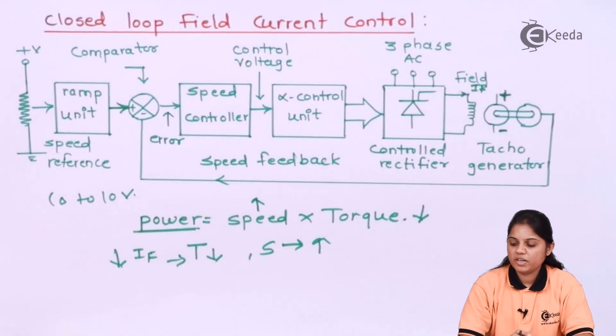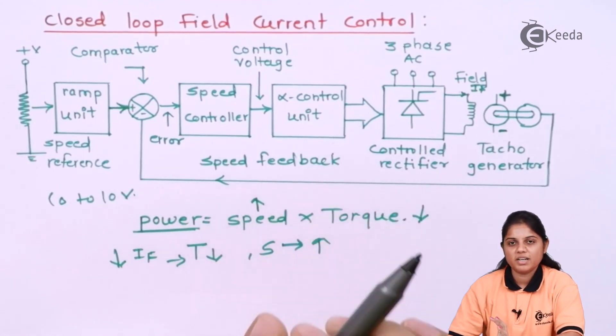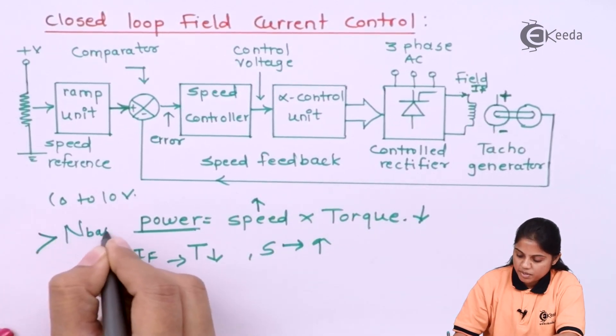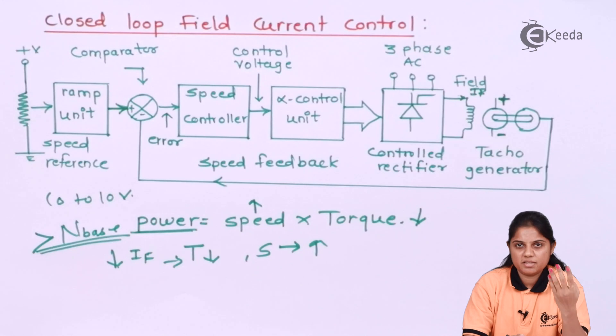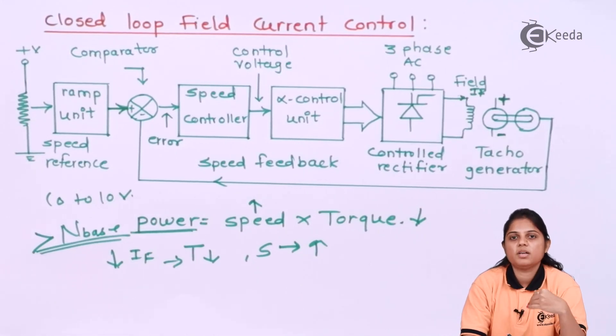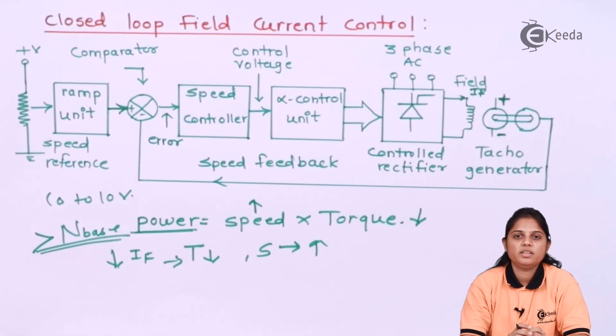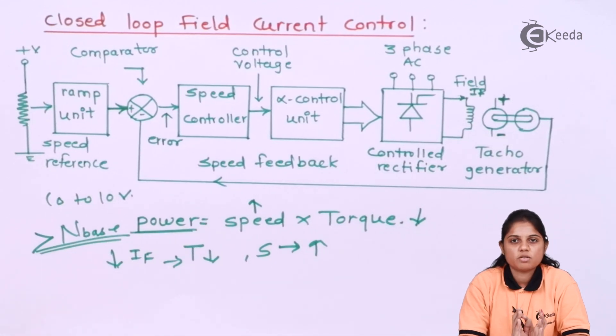This is how your closed loop field current control works. So this particular device can only be used where you want to increase the speed more than the base speed. We have seen in the characteristics that if you want to increase the speed beyond N base, then you have to change the field current.